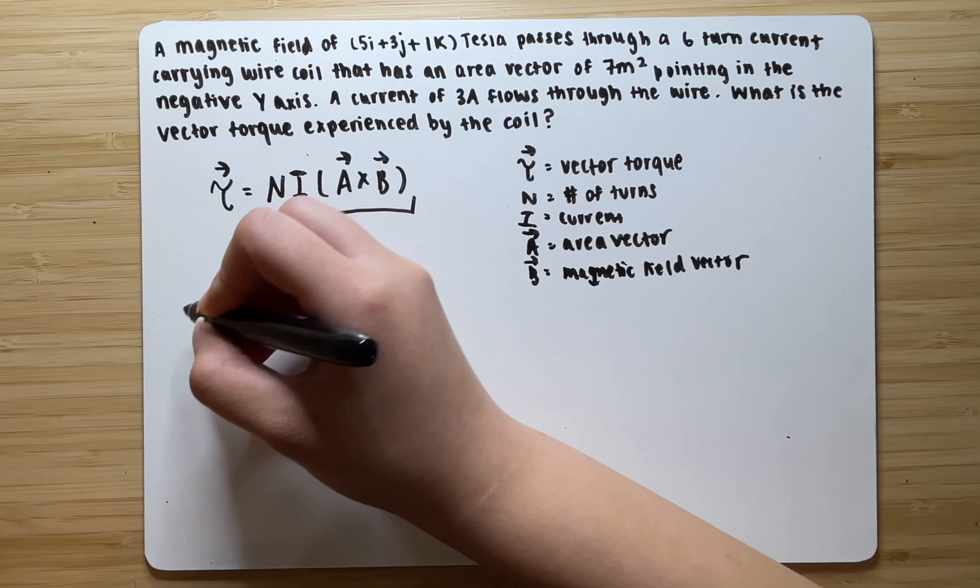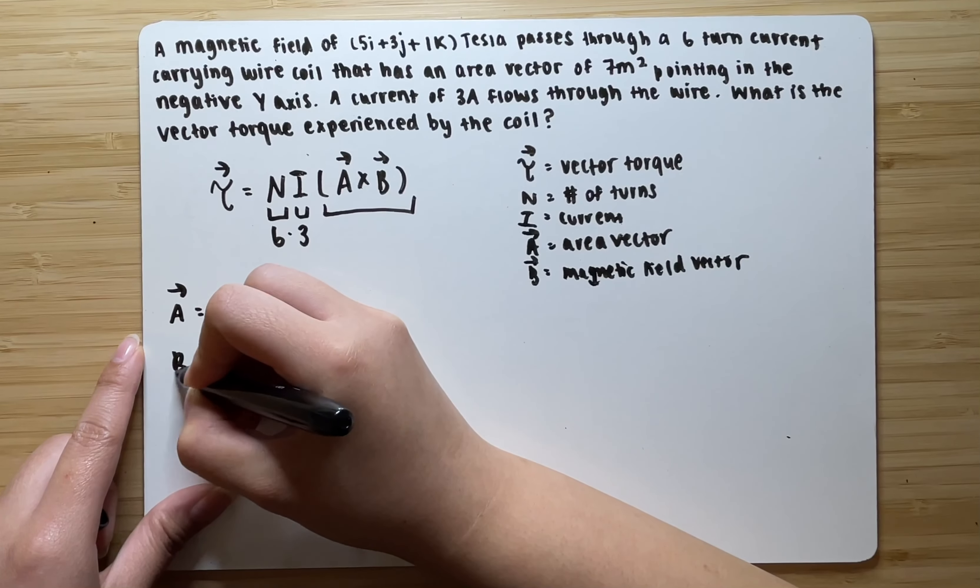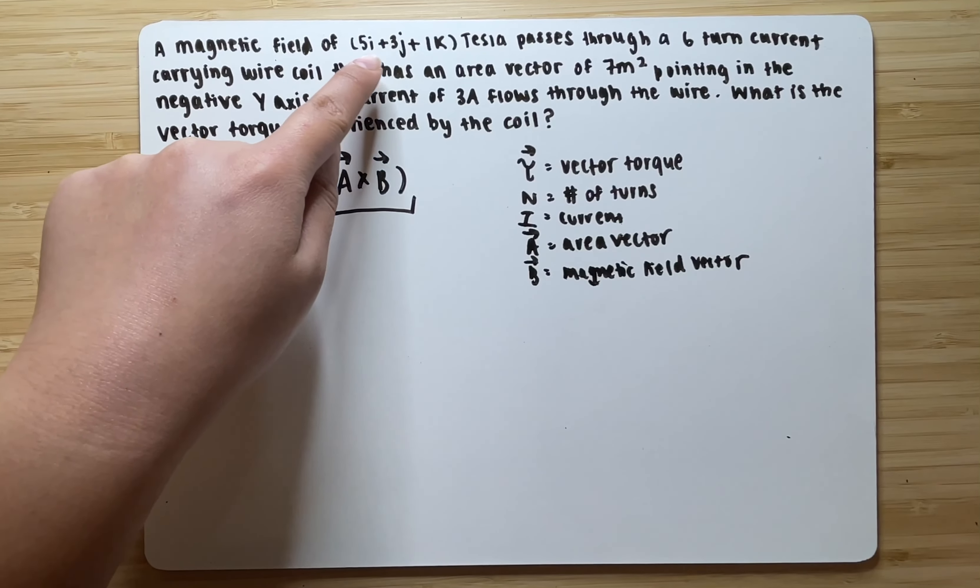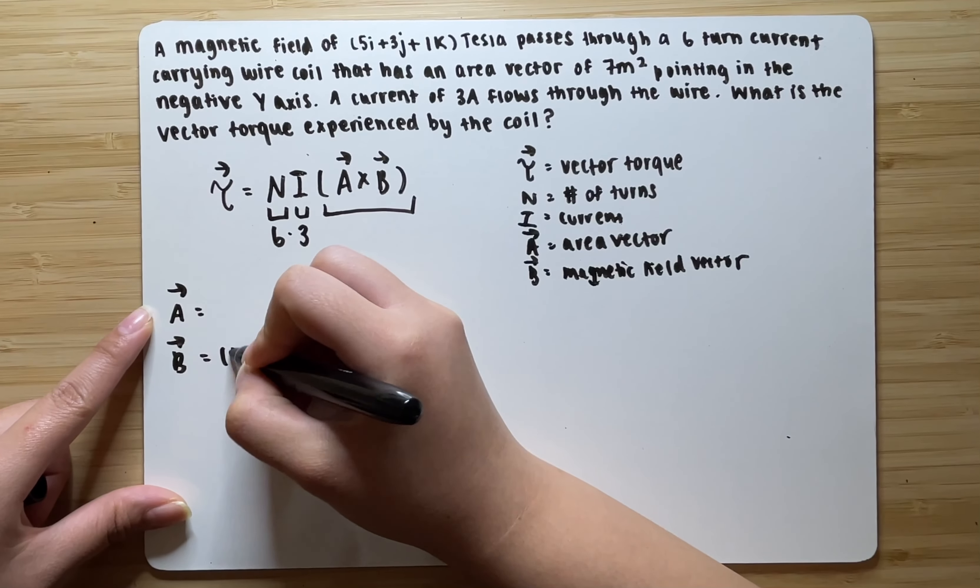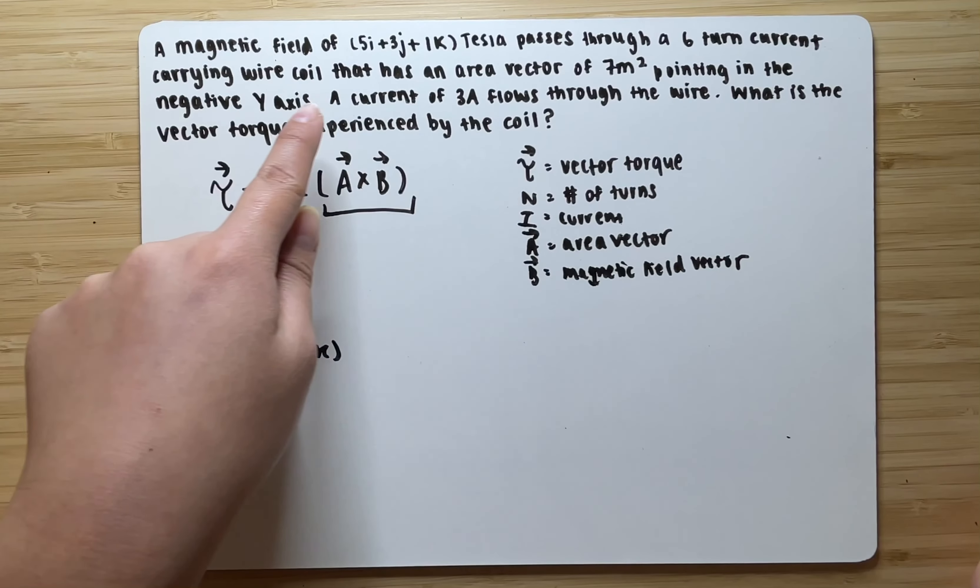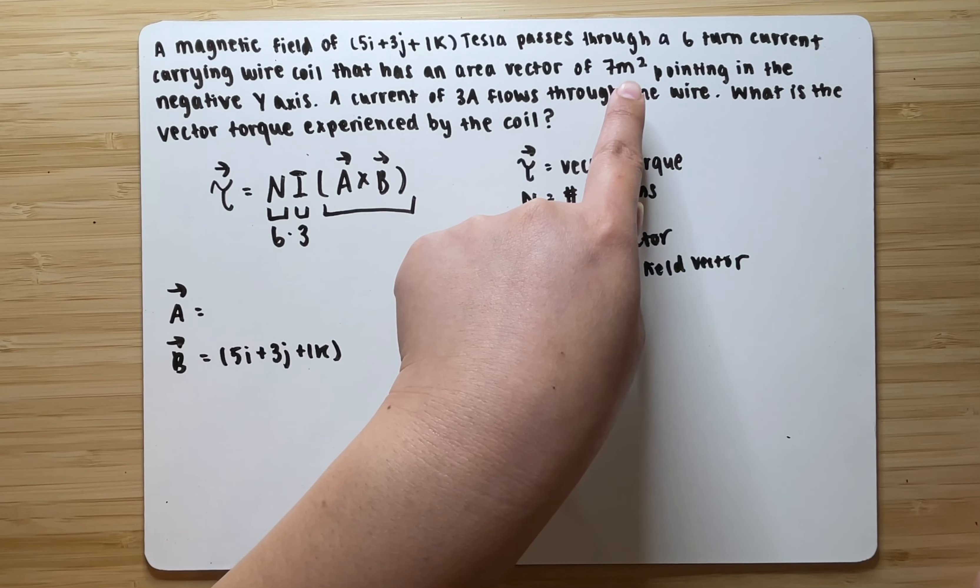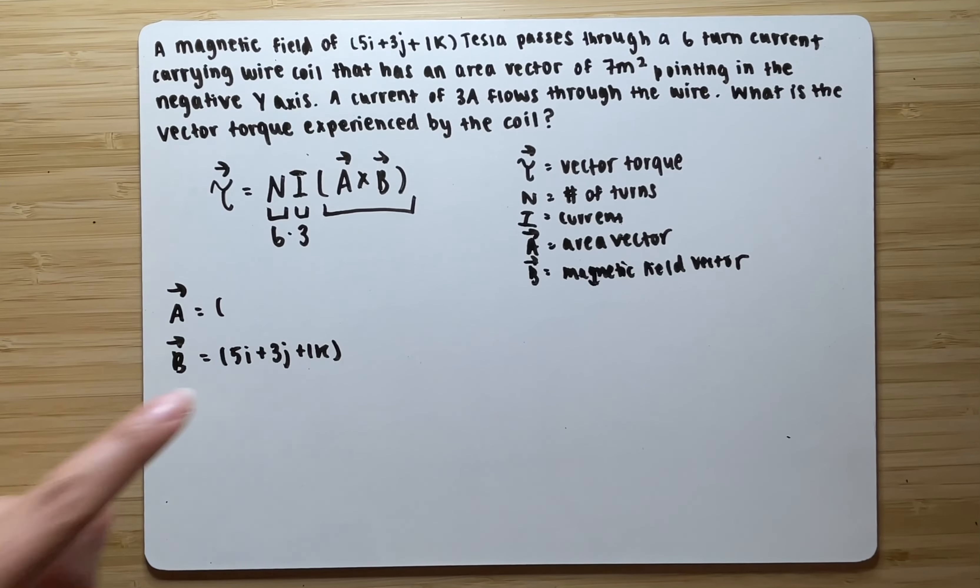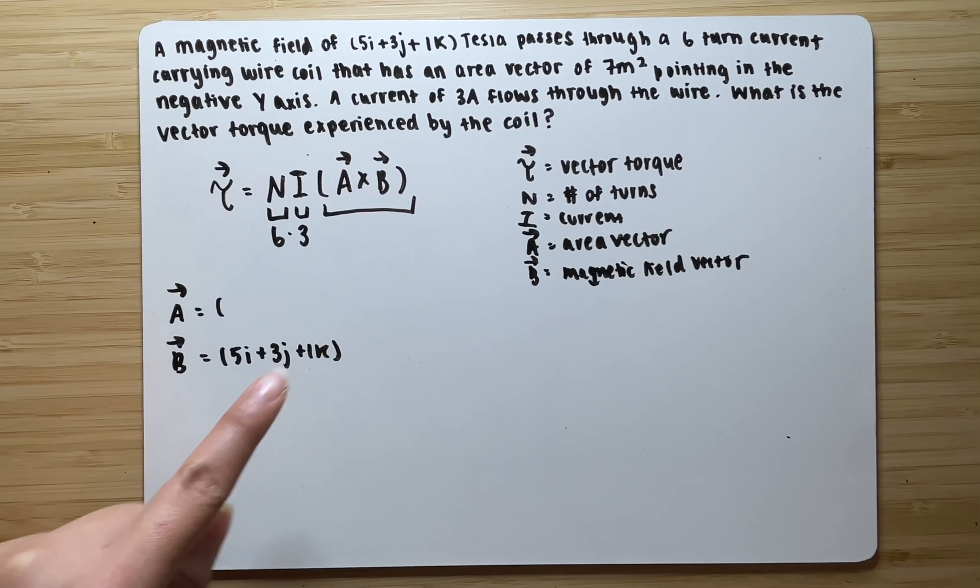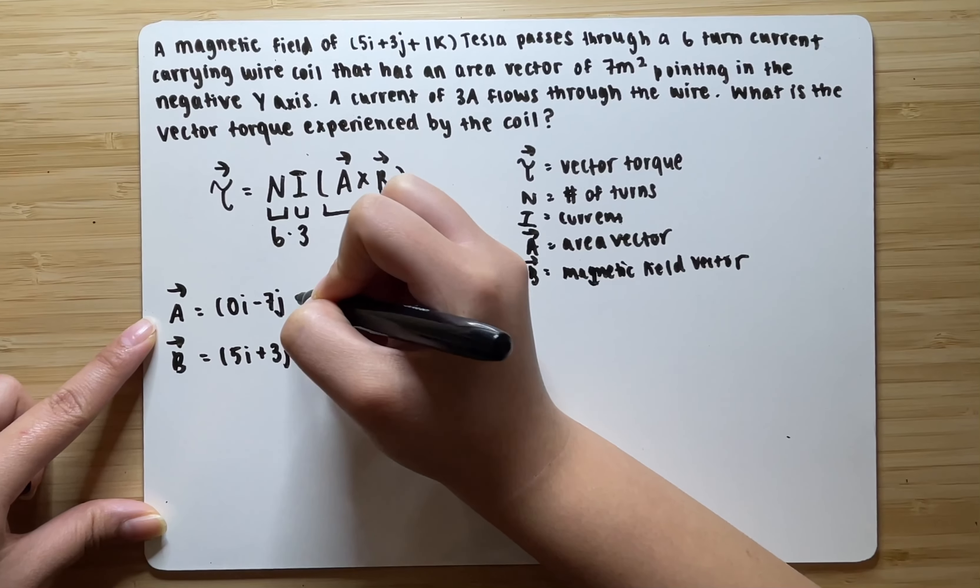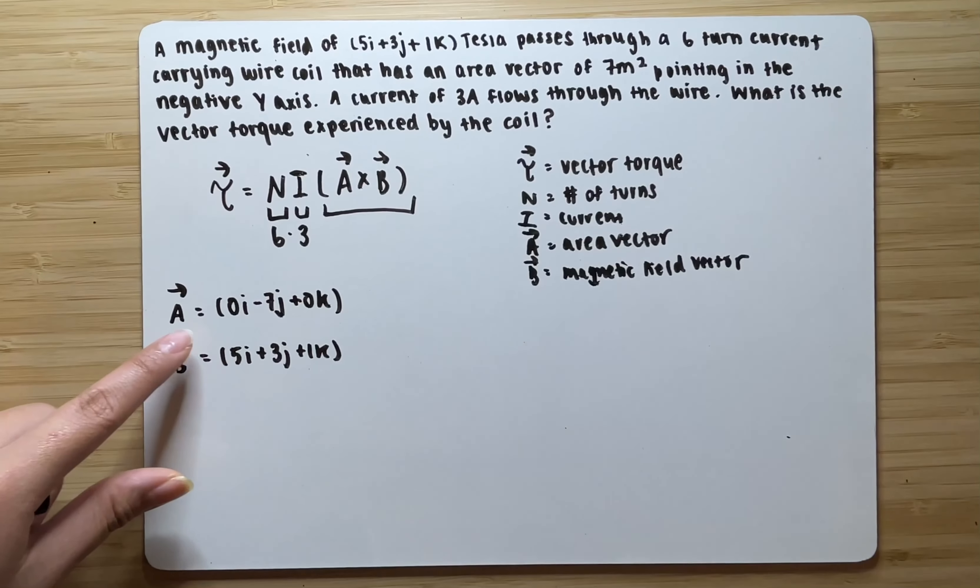But we do know that the area vector and magnetic field vectors are given. The magnetic field is 5i plus 3j plus 1k. The area vector of 7 meters squared pointing in the negative y-axis, meaning that the j component is going to be a negative 7 because it's pointing in the negative y-axis. Everything else is 0. So, 0i negative 7j plus 0k. So this is our area vector.